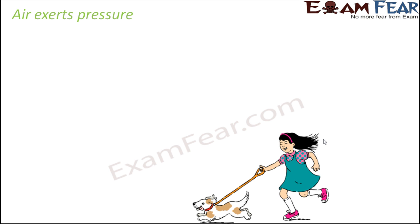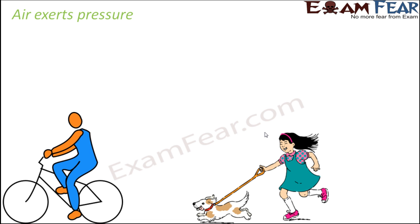Let's take another example. Say you have come out for a walk with your pet, and your pet is running in a certain direction — it kind of pushes you in the same direction, making it easier for you to run. Similarly, if the wind is also blowing in that direction, it supports you even more. Basically, air is exerting pressure on you, which makes it easier to run. Riding a bicycle is also easier when you ride in the same direction as the wind.